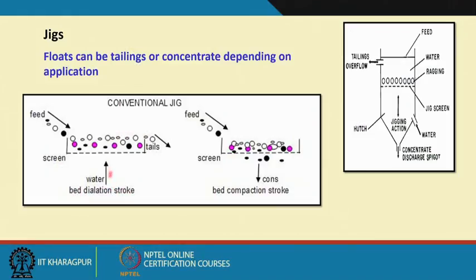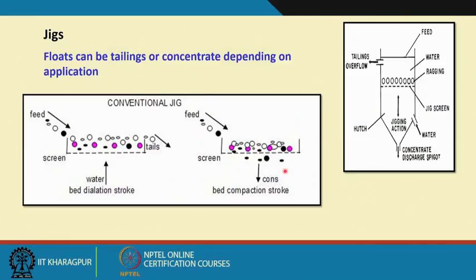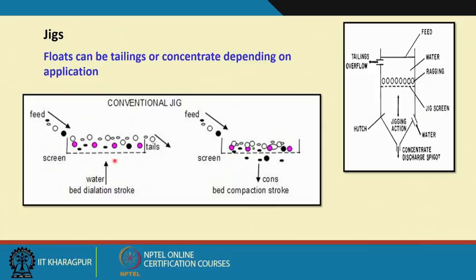These are two techniques: jigging over the bed and jigging under the screen. It is called jigging over the screen when the aperture sizes are such that even the finest particles are coarser than the screen aperture size. When the aperture sizes are bigger than the particles, it is called jigging under the screen.